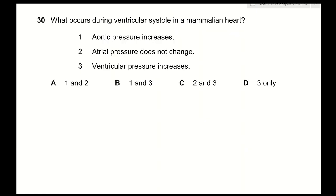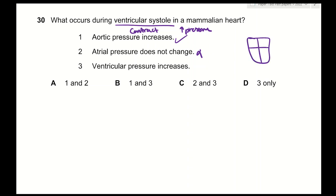Question 30: what occurs during ventricular systole in a mammalian heart? During ventricular systole, the ventricles contract, increasing pressure, pushing the semilunar valves open and sending blood into the aorta or pulmonary artery. 1 — aortic pressure increases — correct. 2 — atrial pressure does not change — incorrect: during ventricular systole, the atria are in diastole, so atrial pressure actually decreases. 3 — ventricular pressure increases — correct. The answer is B (1 and 3).